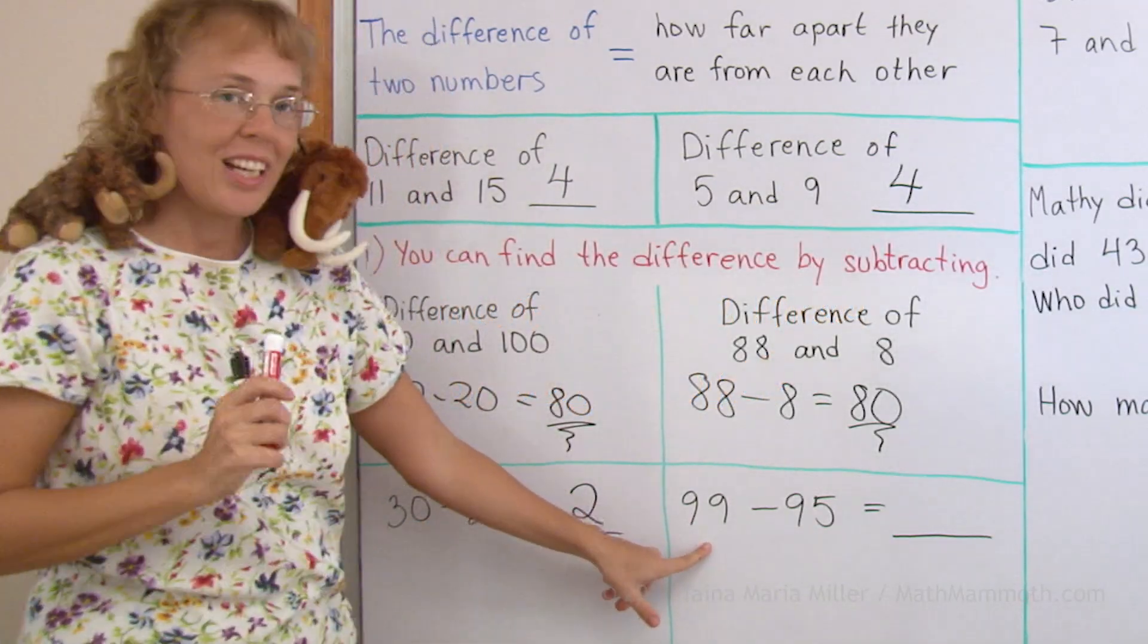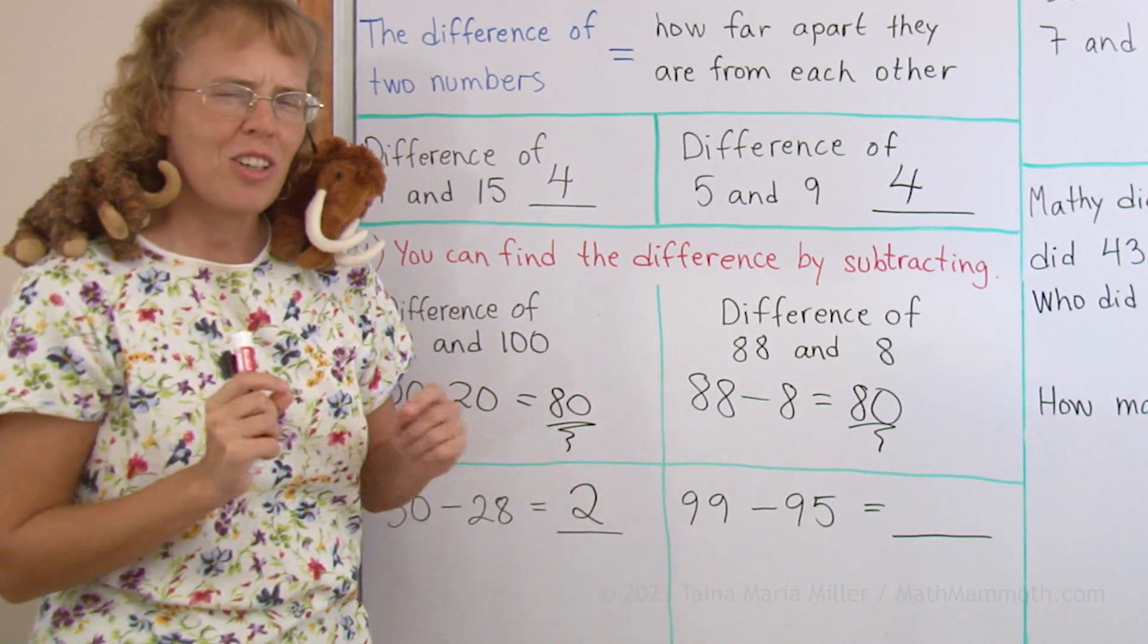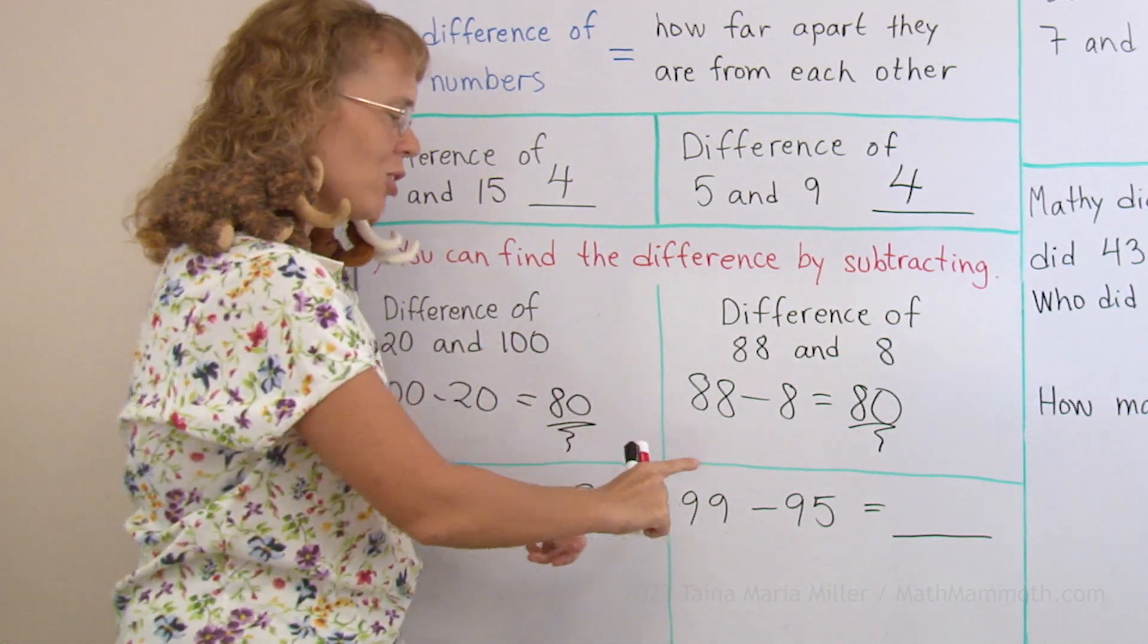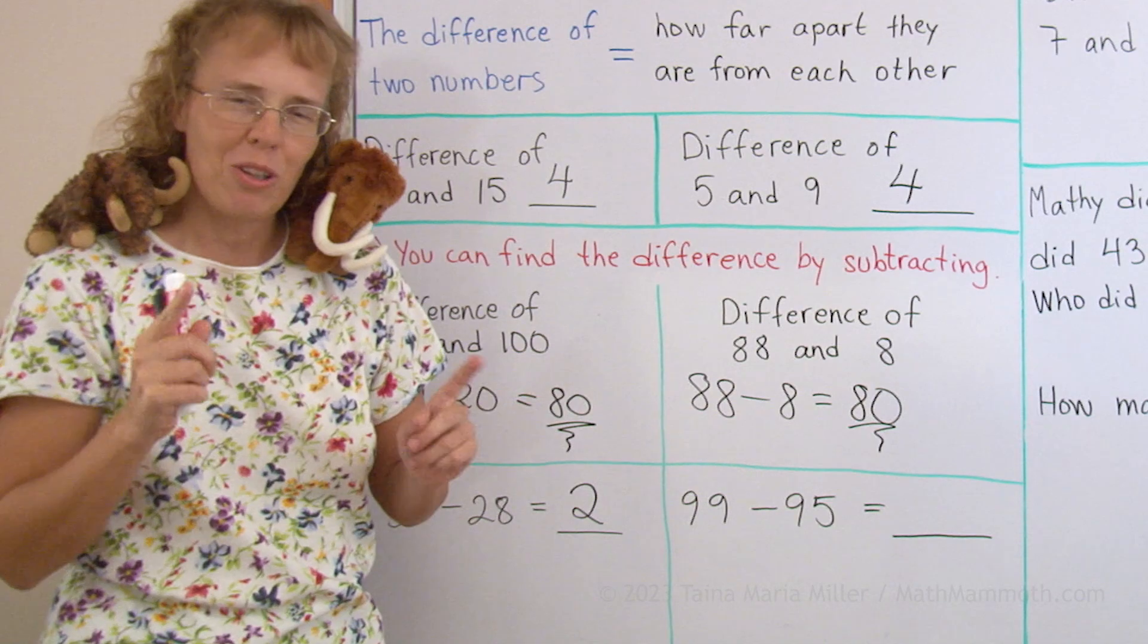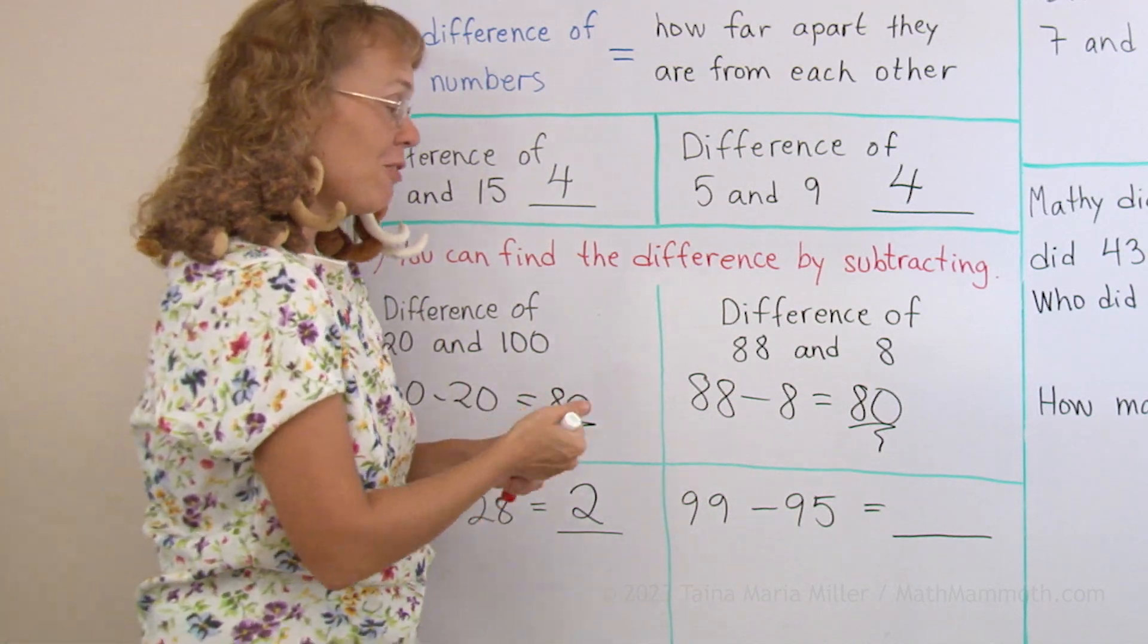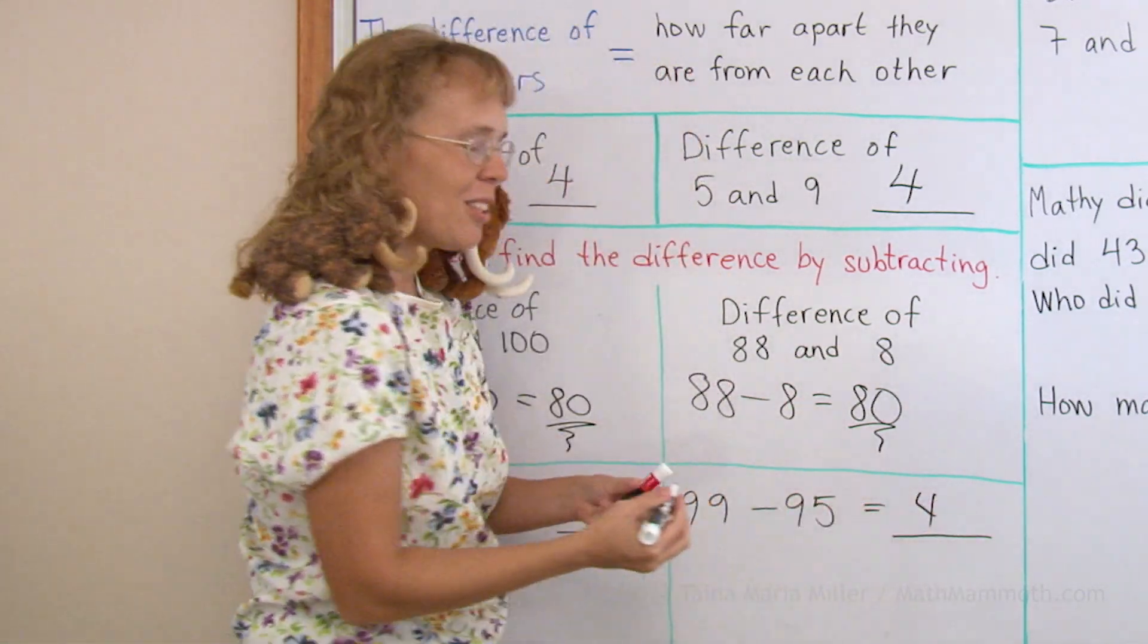Over here, 99 minus 95. Again, these numbers are actually quite close to each other. How close are they to each other? Just four steps. So that's the answer to the subtraction.